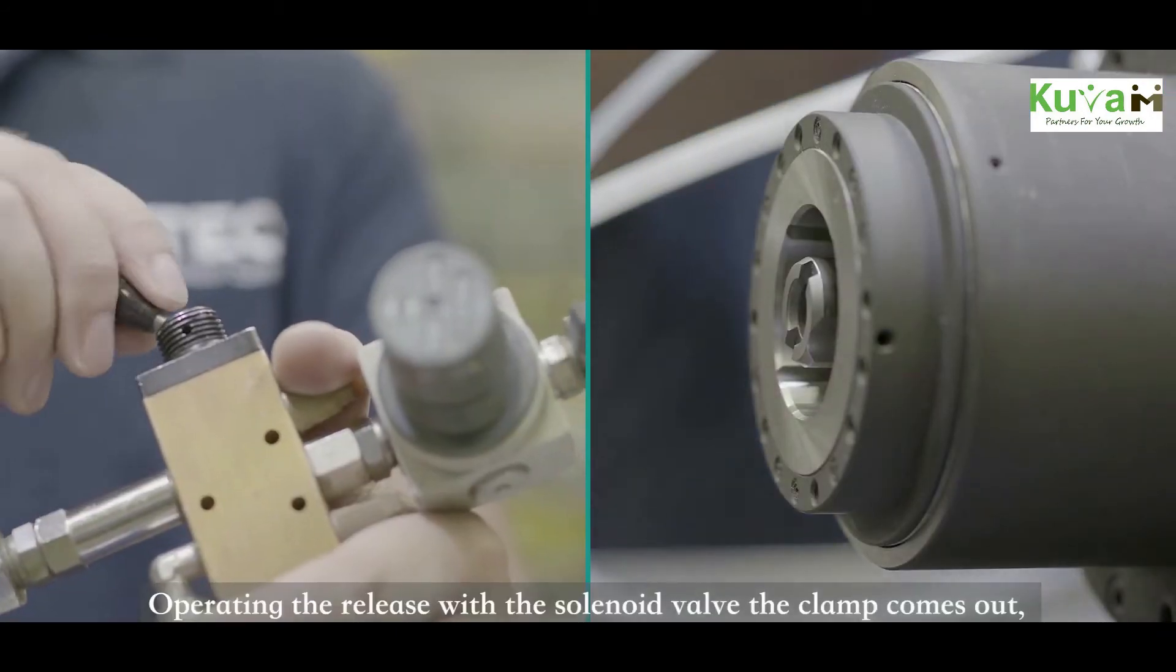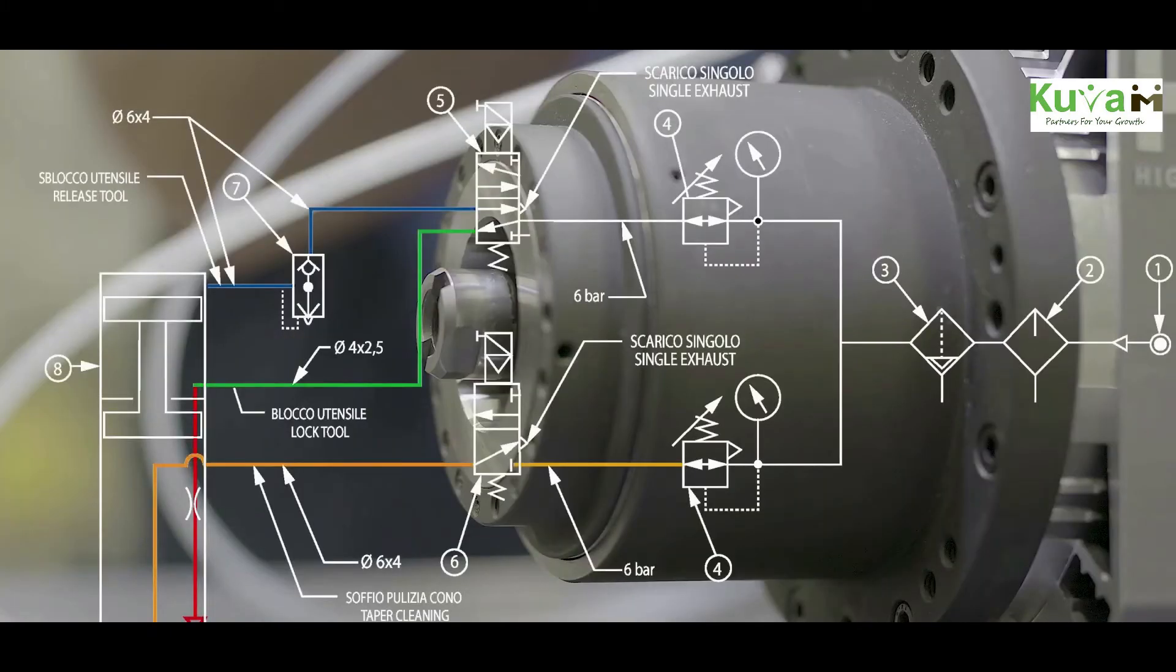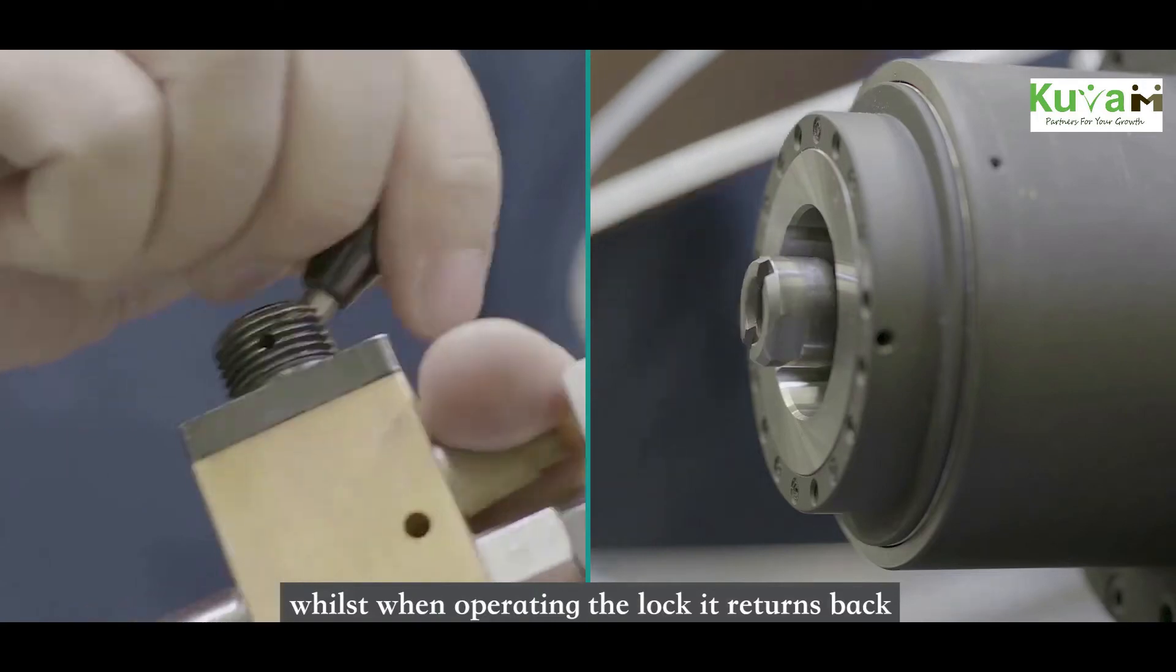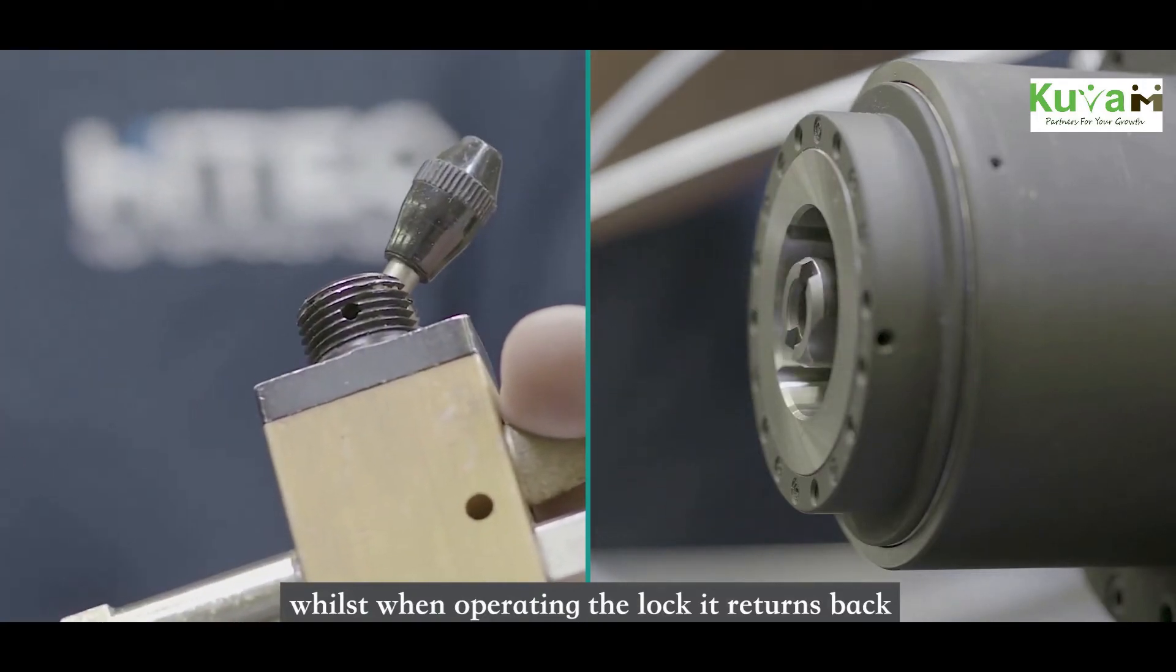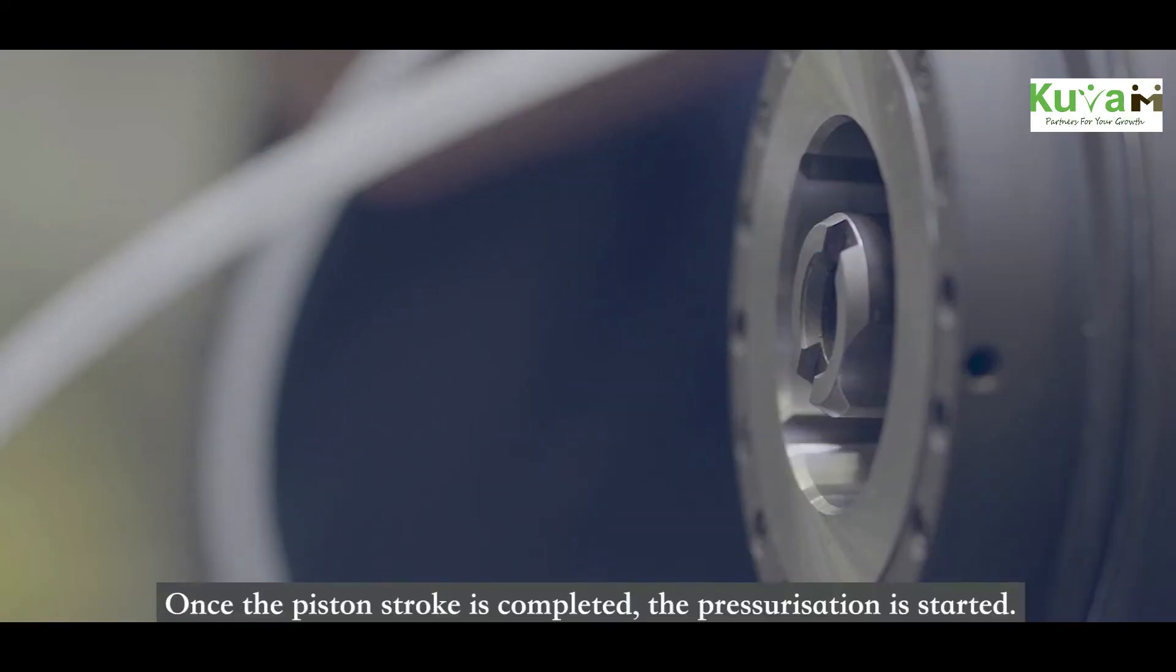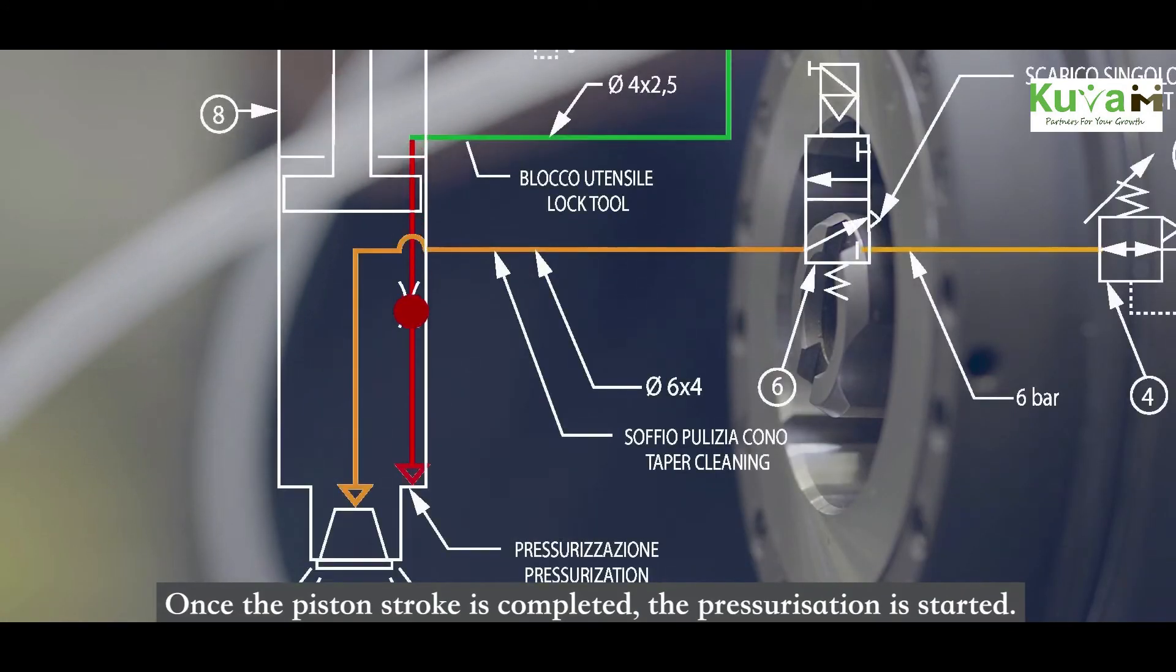Operating the release with the solenoid valve the clamp comes out. Whilst when operating the lock it returns back and the piston retracts to the return position. Once the piston stroke is completed, the pressurization is started.